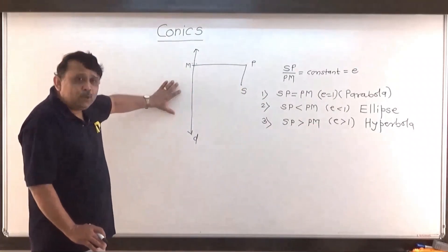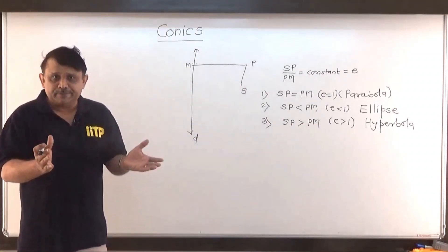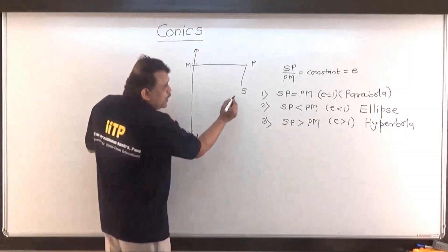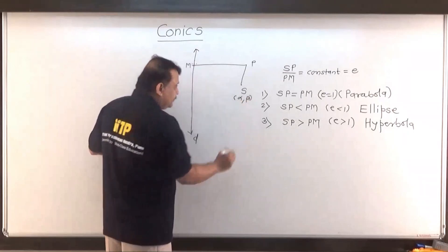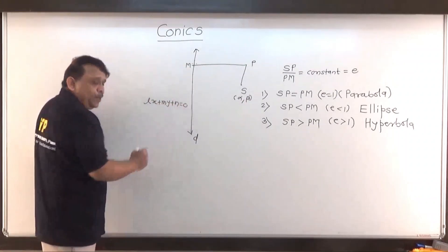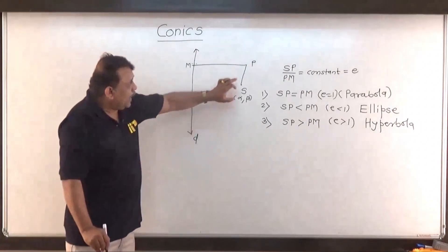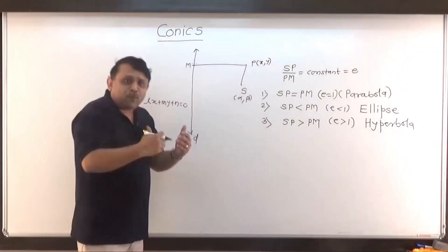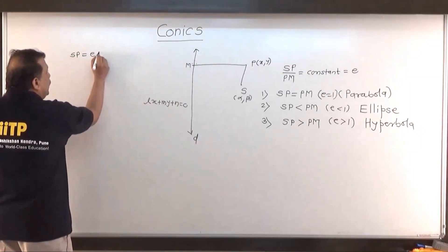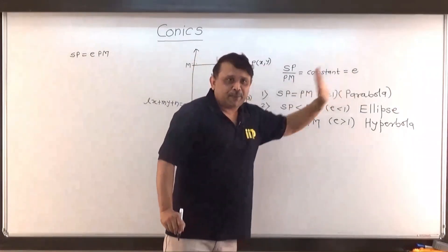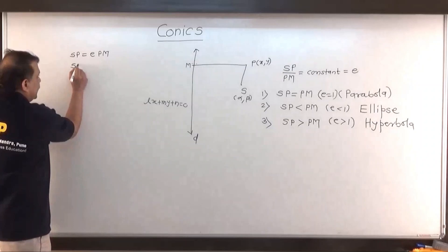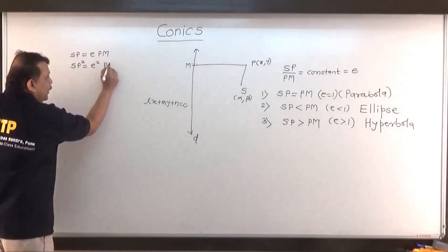Now we will try to find the general equation of a conic — an equation representing the conic. Suppose the fixed point S is at (α, β) and the fixed line has the equation lx plus my plus n equals 0. Suppose the point P is (x, y), any point of the conic, so it will satisfy the condition SP equals e times PM. Cross-multiplying, SP equals e into PM, and squaring both sides, SP² equals e² times PM².